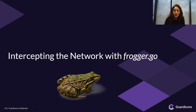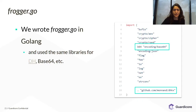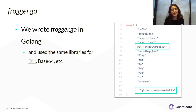With that knowledge and ability, we thought we could understand the scope of the campaign — how many targets there were, how many actually infected nodes. So we decided to write our own tool that we named Frogger, and we used Golang, of course, to speak to the attacker in their own language.